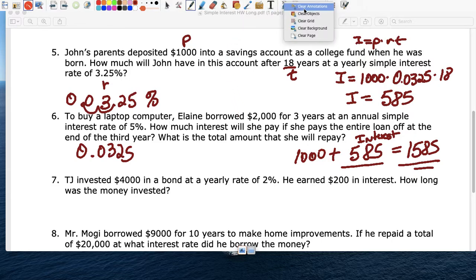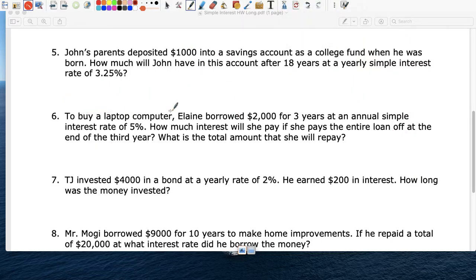Hopefully this is not that bad. To buy a laptop, Elaine borrowed $2,000. So this is your P. For three years. Three years. That's your T, the time. And the interest rate is 5%. So I'm going to put an R here. How much interest is she going to pay?